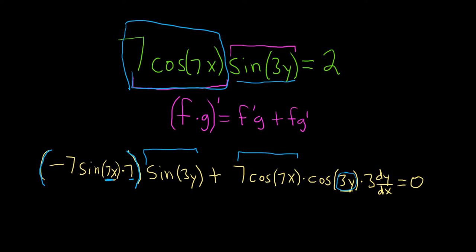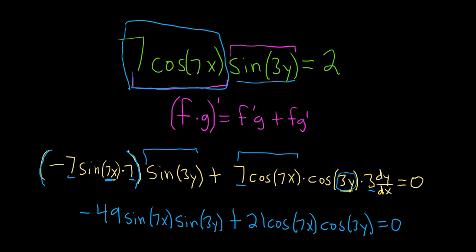Let's go ahead and multiply these 7s. 7 times 7 is 49 so we have negative 49 sine 7x sine 3y, and then here we have 7 times 3 so that's 21. So plus 21 cosine 7x cosine 3y and that's equal to 0. Oh and I forgot the all-important dy/dx. It's really important. That's what we're trying to find in this problem.